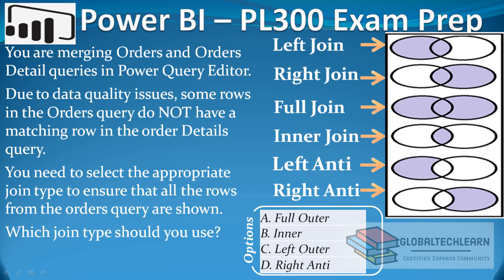The question is: you are merging the Orders and Order Details queries in Power Query Editor. Due to data quality issues, some rows in the Orders query do not have a matching row in the Order Details query. You need to select the appropriate join type to ensure that all rows from the Orders query are shown. Which join type should you use?